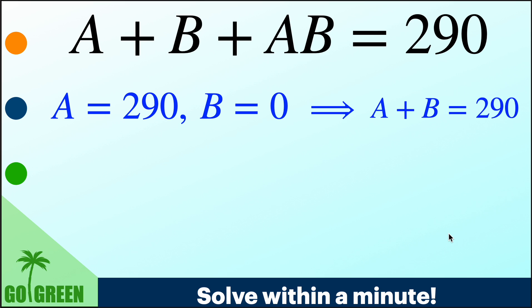There is another solution also. Following this, you can take A to be 0 and B to be 290. Then also A plus B plus AB is 290. And then in this case also A plus B is 290. So is that the correct answer?